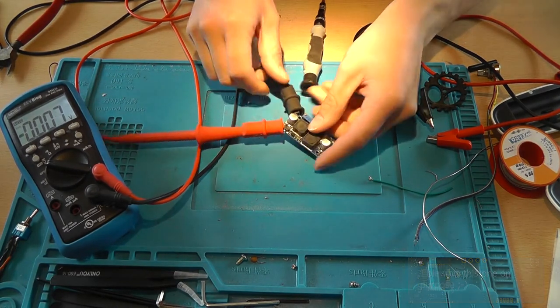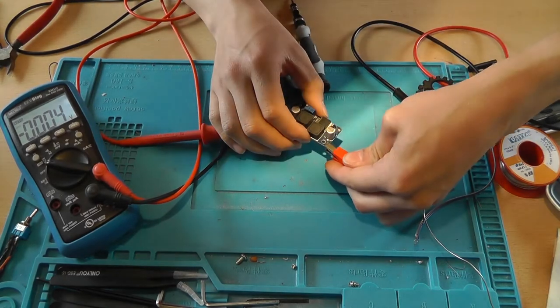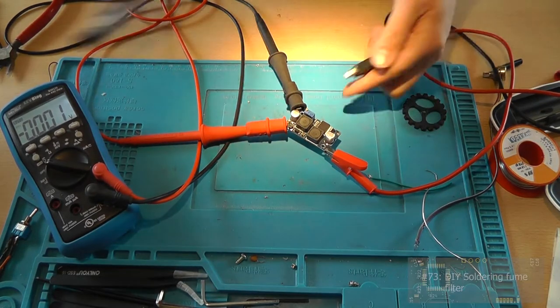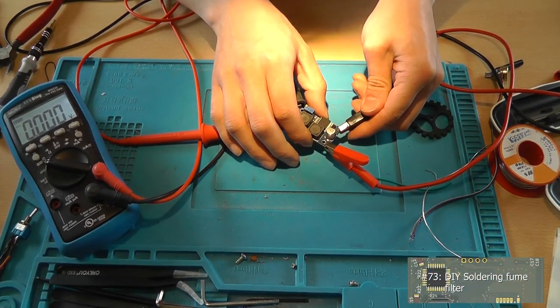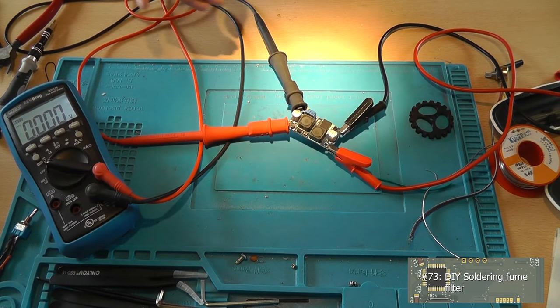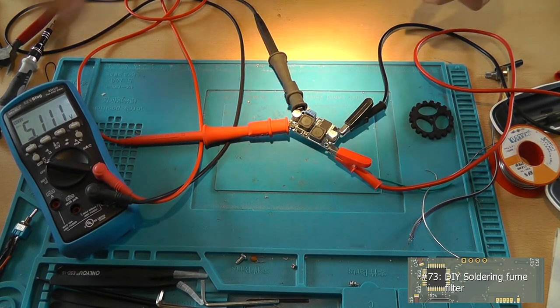Hey guys, this is Tim from Things at Tonics Lab. In this video I'm going to show you how to make a soldering fume extractor and filter. In order to make the speed of the fans adjustable, I'm going to use a buck boost converter.